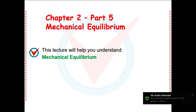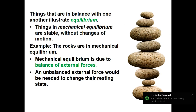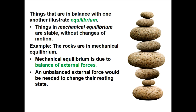Chapter 2, Part 5: Mechanical Equilibrium. Things that are in balance with one another is an example of equilibrium. So things in mechanical equilibrium are stable without changing motion.